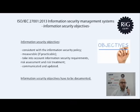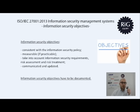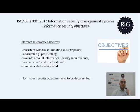Every management system standard requires objectives, and ISO 27001 is no exception. The organization must establish information security objectives that are consistent with the information security policy, measurable as much as possible, and take into consideration information security requirements, risk assessment, and risk treatment. They must be communicated so that people are aware of the company's information security objectives, updated when accomplished or when their achievement becomes unattainable, and documented. Typically, top management decides the objectives.